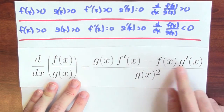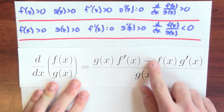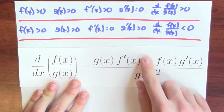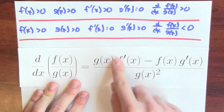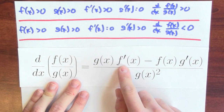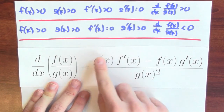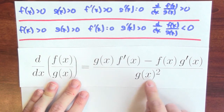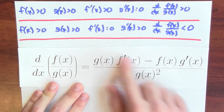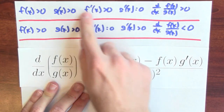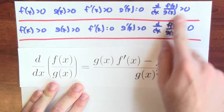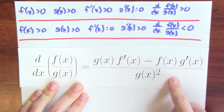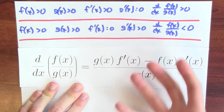If the numerator is getting bigger but the denominator is staying the same, the denominator staying the same makes this term zero, which kills the whole second term, and all I'm left with is the first term. Imagining g is positive, and if the derivative of the numerator is positive, this is positive — a positive thing divided by a positive thing. That makes the derivative positive, and that makes sense: if the numerator is getting bigger and the denominator is staying the same, the derivative is positive. And that's exactly what the true quotient rule is saying.